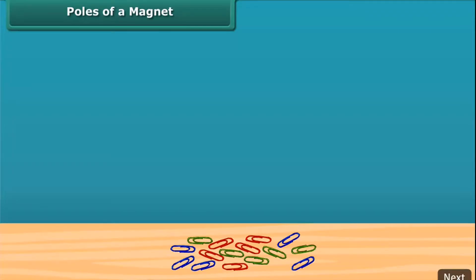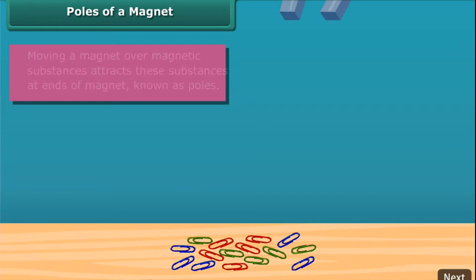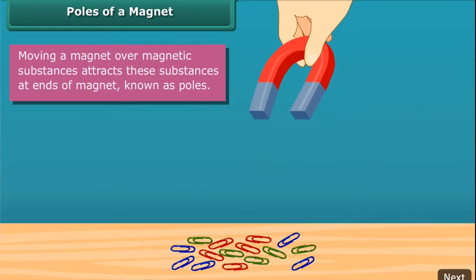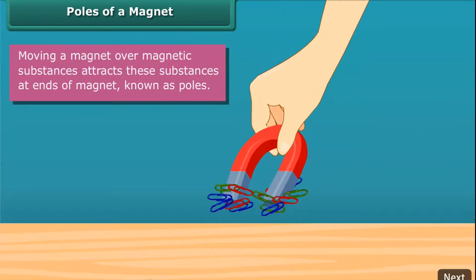Poles of a Magnet. When you move a magnet over magnetic substances, you will see that these substances get attracted to particular parts of the magnet only. These are generally the two ends of the magnet. These ends are called the poles of the magnet.